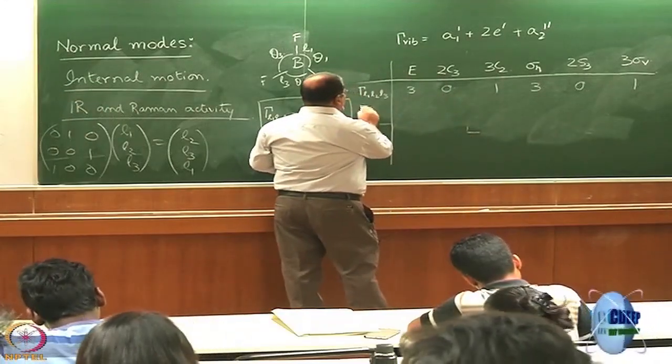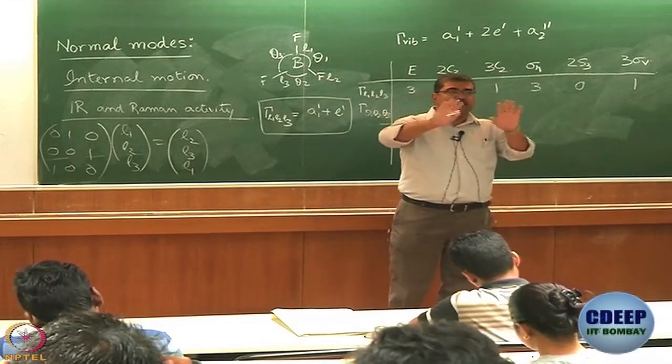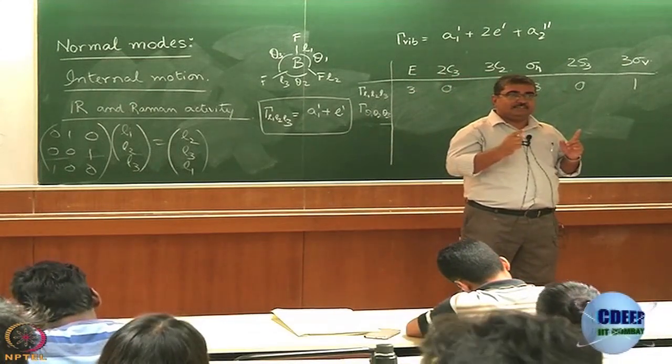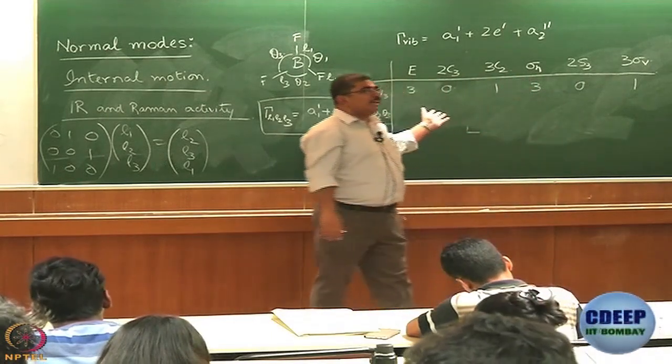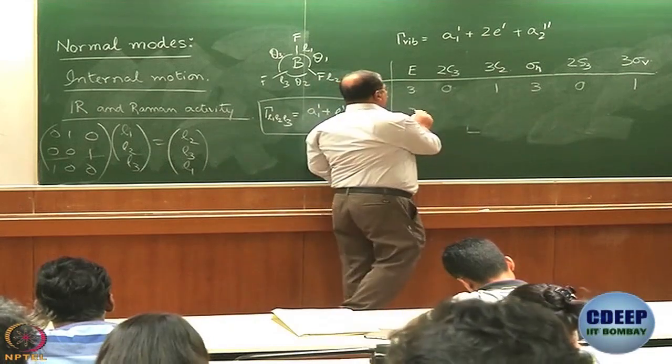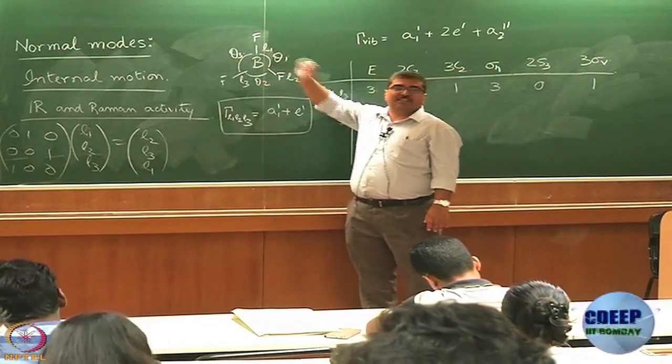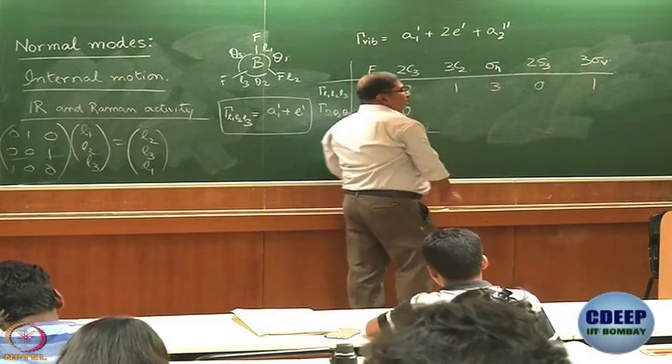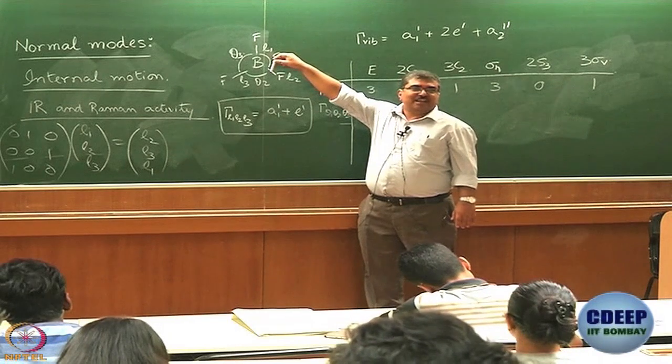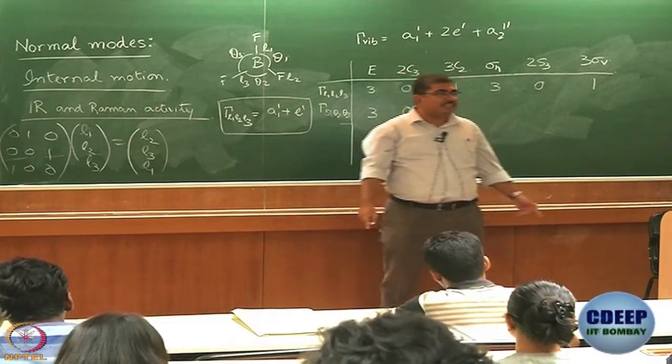Now if I try to make gamma theta 1, theta 2, theta 3, I want to use these three. When I say theta 1, theta 2, theta 3, what is important to remember is that all these are in-plane bends. What will the characters be for gamma theta 1, theta 2, theta 3? What is the character of E? 3. What is the character of C3? Theta 1 becomes theta 2, theta 2 becomes theta 3, theta 3 becomes theta 1, so 0. What about C2? 1 or minus 1?